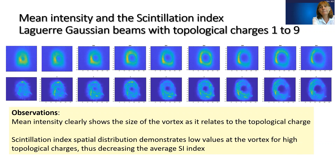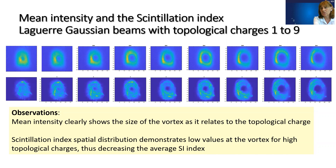This image shows the mean intensity for the beams we considered. We have about 3,000 images taken into account for each of these mean intensity pictures, and we can see how nicely the vortex size matches the topological charge in our analysis. The bottom row of images is more interesting because those are the scintillation index calculated for each pixel in the image, and we can clearly see that as we increase the topological charge, the vortex also grows in the scintillation index calculations — and thus we see less average scintillation index for the higher topological charges.